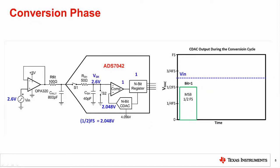This slide covers the details of the conversion phase. At the start of the conversion phase, switch S1 is open and the amplifier's output is stored on the sample and hold capacitor from the acquisition phase. In this case, the sample and hold capacitor has 2.6 volts stored on it, which is the amplifier's output. The conversion phase process will do a comparison for each bit. This is a 5-bit converter, so five comparisons will be done starting with the most significant bit, or MSB, and moving to the least significant bit, or LSB.